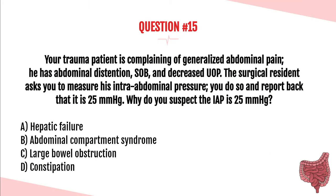Question number fifteen. Your trauma patient has generalized abdominal pain, abdominal distension, shortness of breath, and decreased urine output. The surgical resident asks you to measure his intra-abdominal pressure, and you report back that it is 25 mmHg. Why do you suspect intra-abdominal pressure is 25 mmHg? A. Hepatic failure. B. Abdominal compartment syndrome. C. A large bowel obstruction. Or D. Constipation. The answer is B — abdominal compartment syndrome.